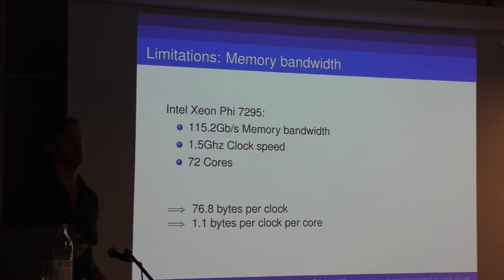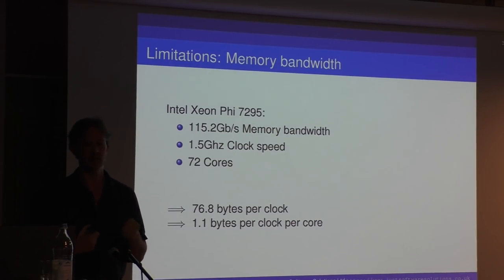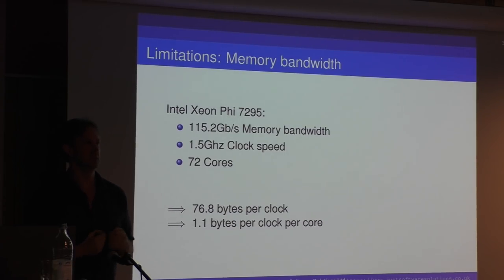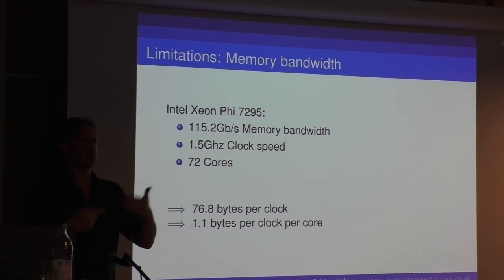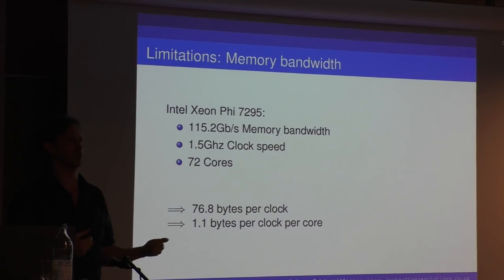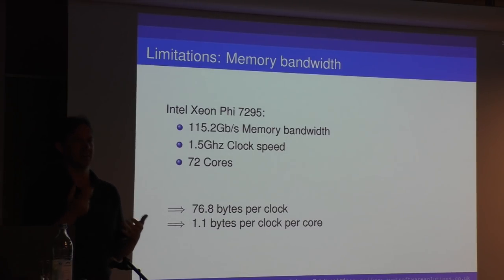Take an Intel Xeon 5-7295: it claims 115.2 gigabytes per second memory bandwidth and a 1.5 GHz clock speed with 72 cores. If you do the math, that means it can transfer 76.8 bytes per clock — which is not a lot. Divide that by the cores and that's one byte per core per clock. You're going to end up being memory-bound in your processor.